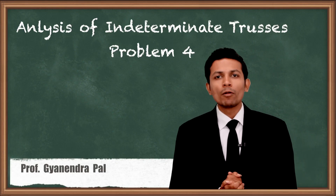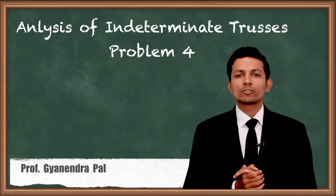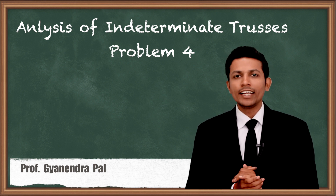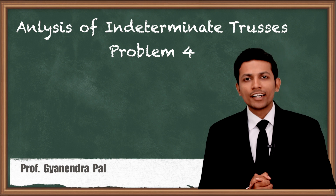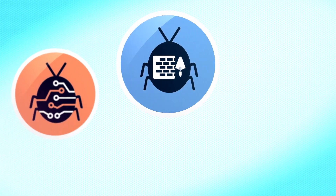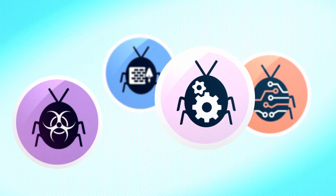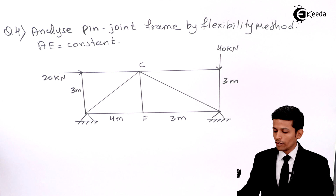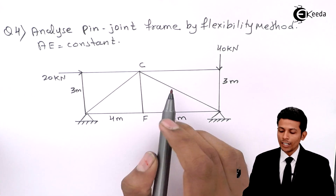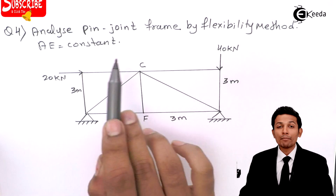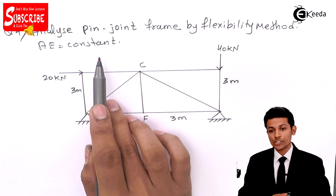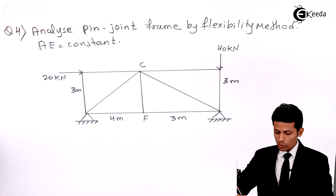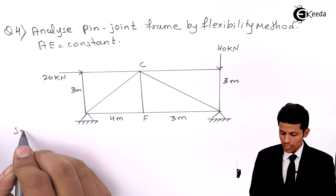Hello friends, let's see another problem on trusses. This problem is quite interesting, so please listen carefully till the end. Let's see in detail: Problem Number 4 on trusses. This is the question given to us — analyze the pin-jointed frame by flexibility method. AE is equal to constant.